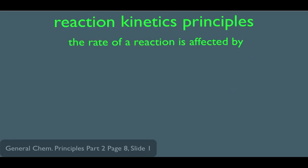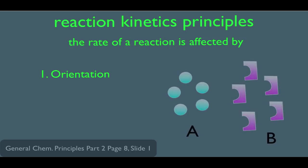The rate of a reaction is affected by three things. Number one, the orientation, or sometimes called steric considerations. Let's say these are our reactants, A and B. In order for them to react with each other, they have to be in the right orientation. This is the correct fit of A and B. If these two reactants don't meet up in that orientation, the reaction will not take place. So a correct orientation is needed for A to react with B.